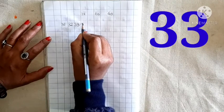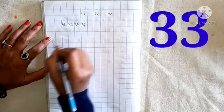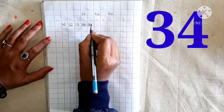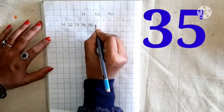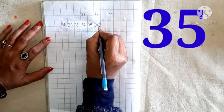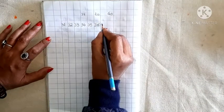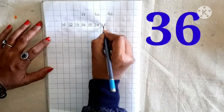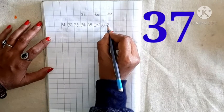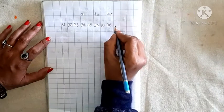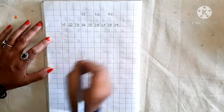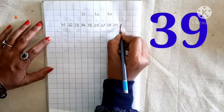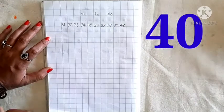After 33, 34. After 34, 35. After 35, 36. After 36, 37. After 37, 38. After 38, 39. After 39, 4, 0, 40. Okay?